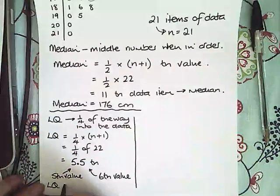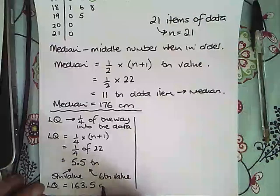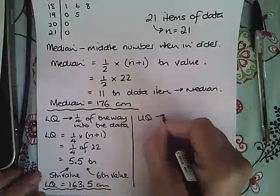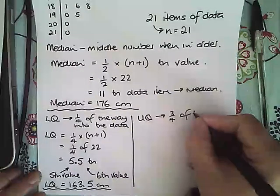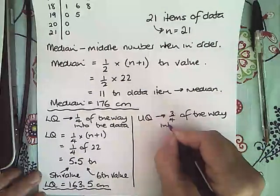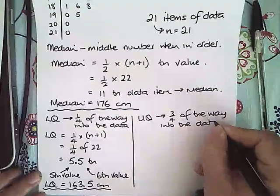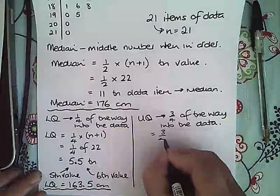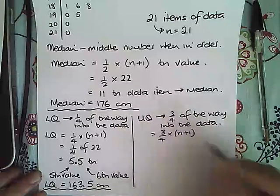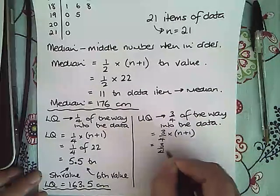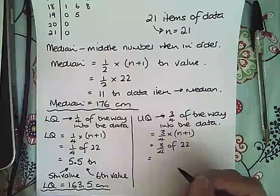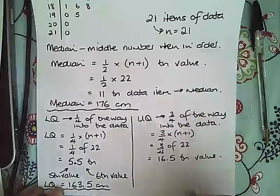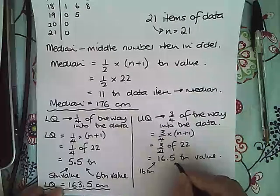The upper quartile is three quarters of the way into the data, and similarly we are going to use 3/4 times n plus 1 as our method of finding it, which would give us three quarters of 22, and that would be our 16.5 value, which actually means it's going to be between the 16th value and 17th value.